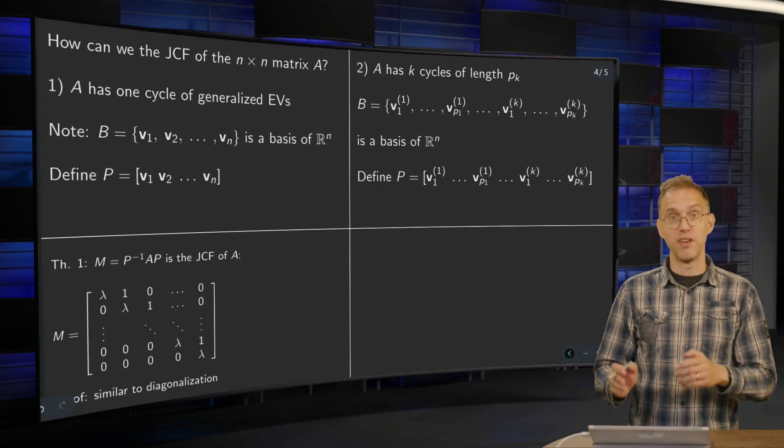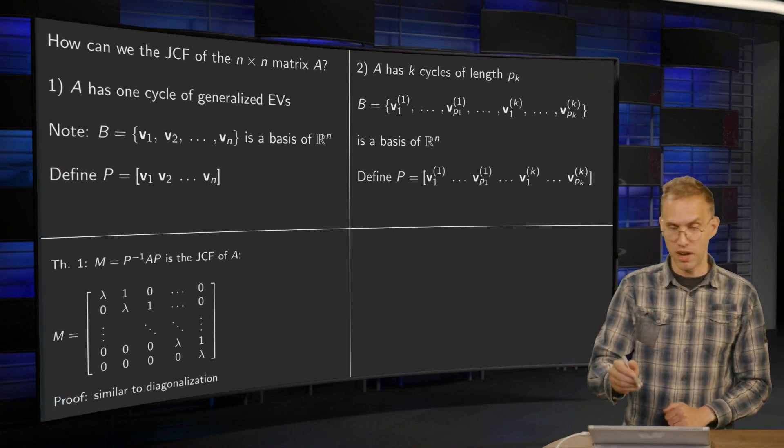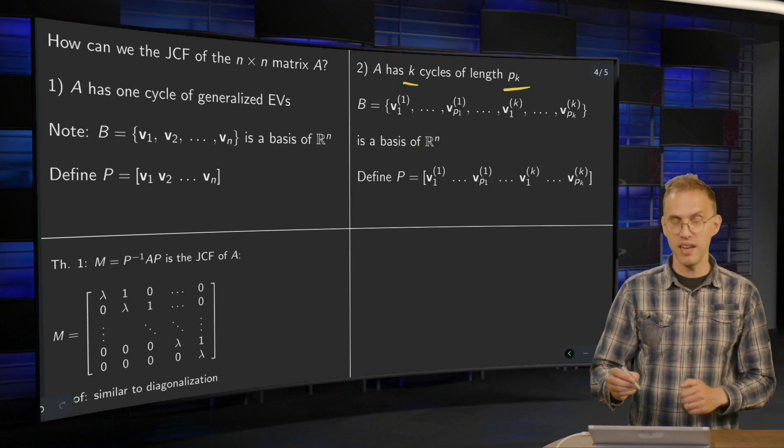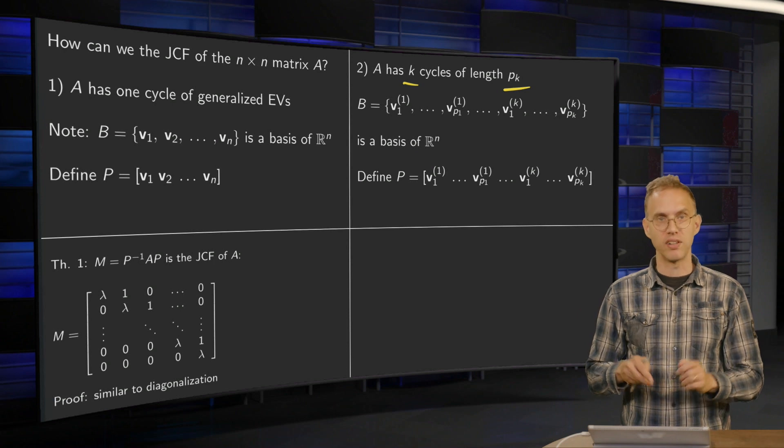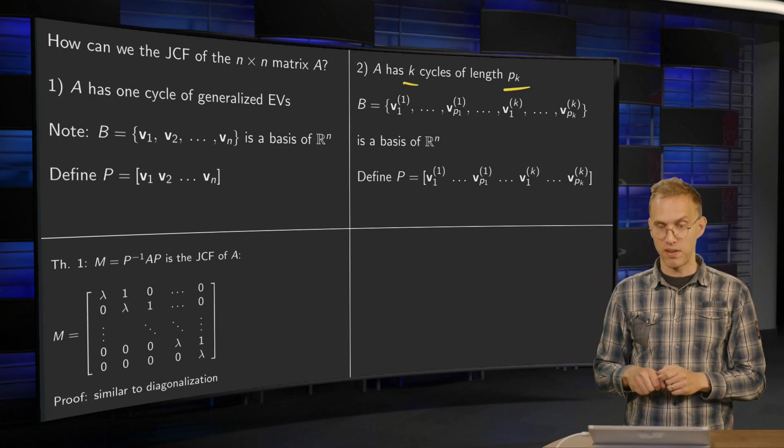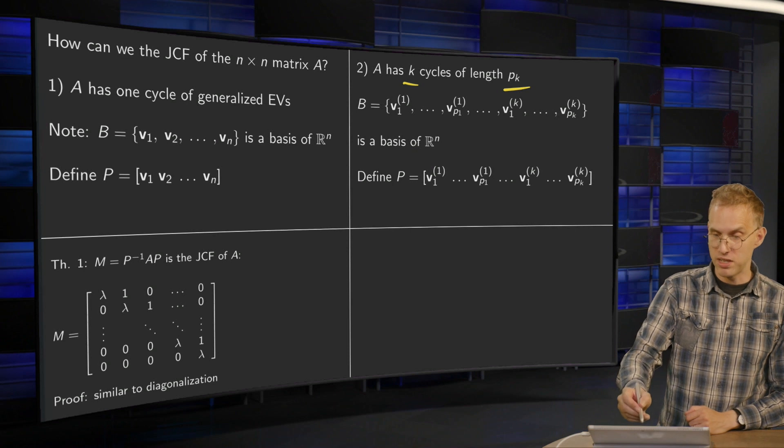Now, what if you have more cycles? Suppose you have K cycles of length ρ_k. They can be of same eigenvalues or of different eigenvalues—that doesn't matter. You have multiple cycles of length ρ_k, so then you can form your basis.